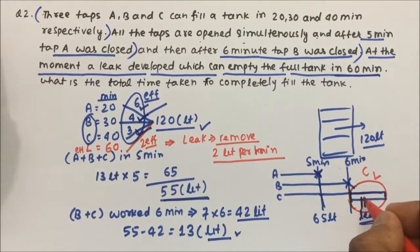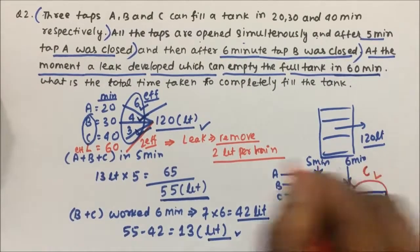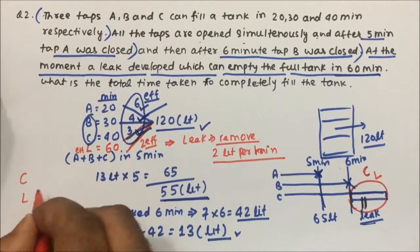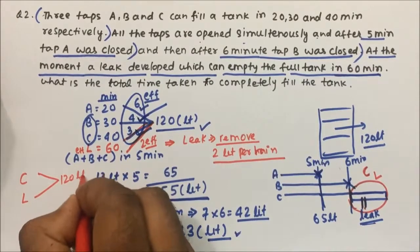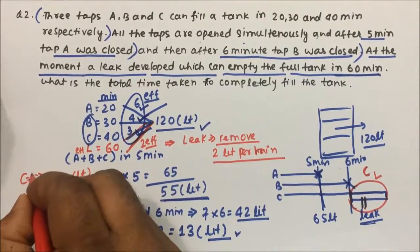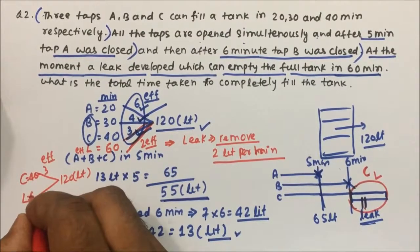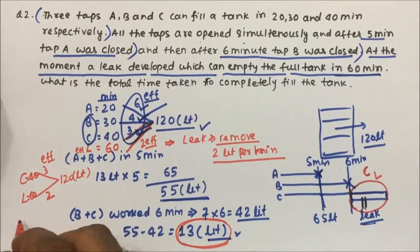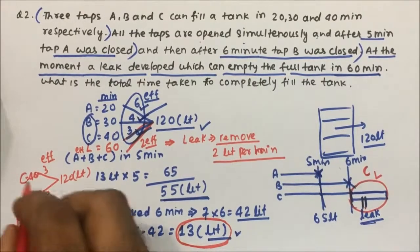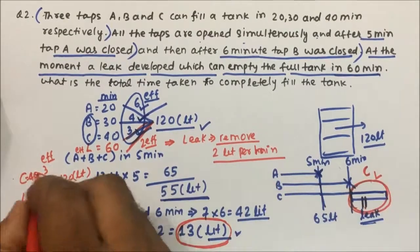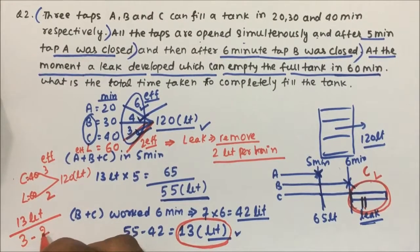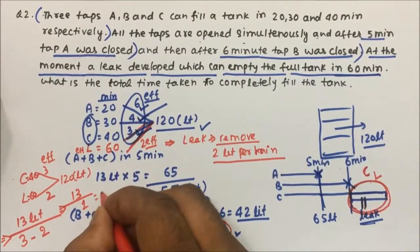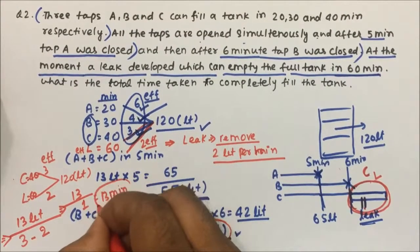At this stage, C is filling and the leak is removing water. C has efficiency 3 liters per minute, and the leak removes 2 liters per minute. The net rate is 3 minus 2, which equals 1 liter per minute. To fill the remaining 13 liters at 1 liter per minute, C and the leak together will take 13 minutes.